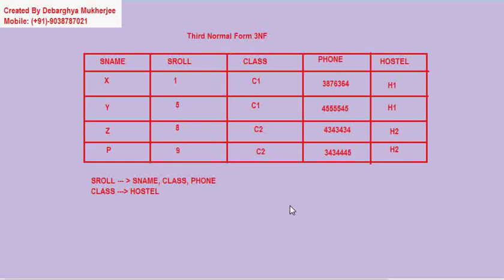Now given this situation, we will say that we must solve this relationship in third normal form or 3NF. In 3NF we will simply remove the columns that are not dependent upon the primary key. Here S role is our primary key, and hostel is actually dependent on class, not directly on S role.